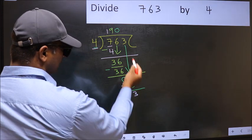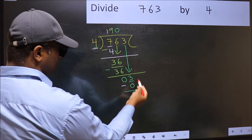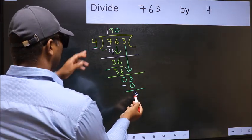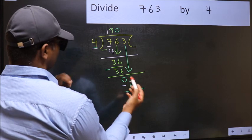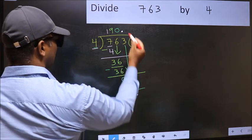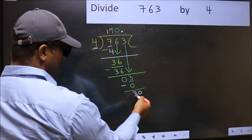Over here, we did not bring any number down. And 3 is smaller than 4. So now you can put a dot and take 0. So 30.